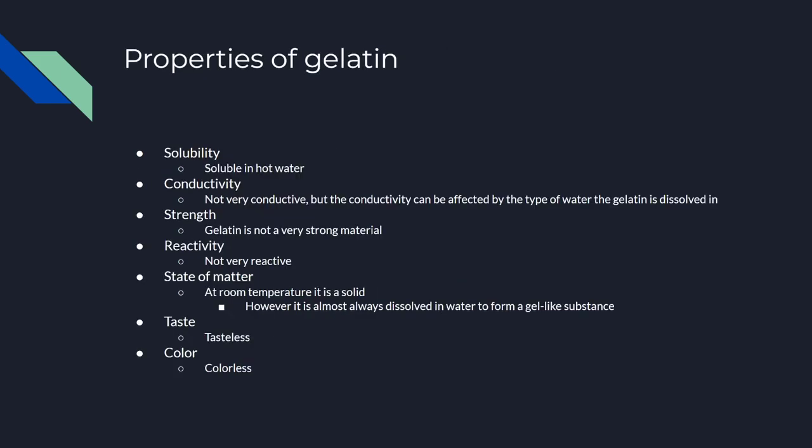What are some of the properties of gelatin? Solubility — it's soluble in hot water. Conductivity — gelatin is not very conductive, but the conductivity can be affected by the type of water that gelatin is dissolved in.